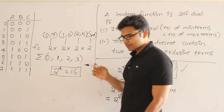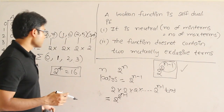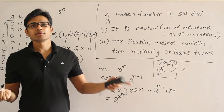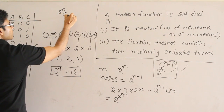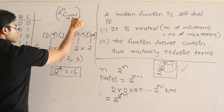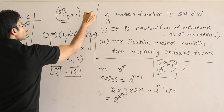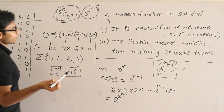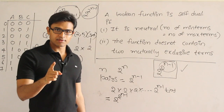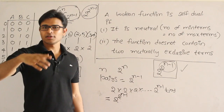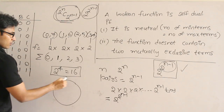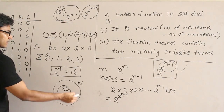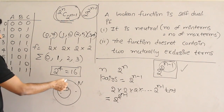We have already seen neutral functions. A neutral function means from 2 to the power n minterms, I have to choose exactly half. The number of neutral functions is C(2^n, 2^(n-1)). The number of self-dual functions is 2 to the power (2^(n-1)). If a function has to be a self-dual function, first of all it should be a neutral function. But if a function is neutral, it need not be a self-dual function. So every self-dual function is a neutral function, but not vice versa.